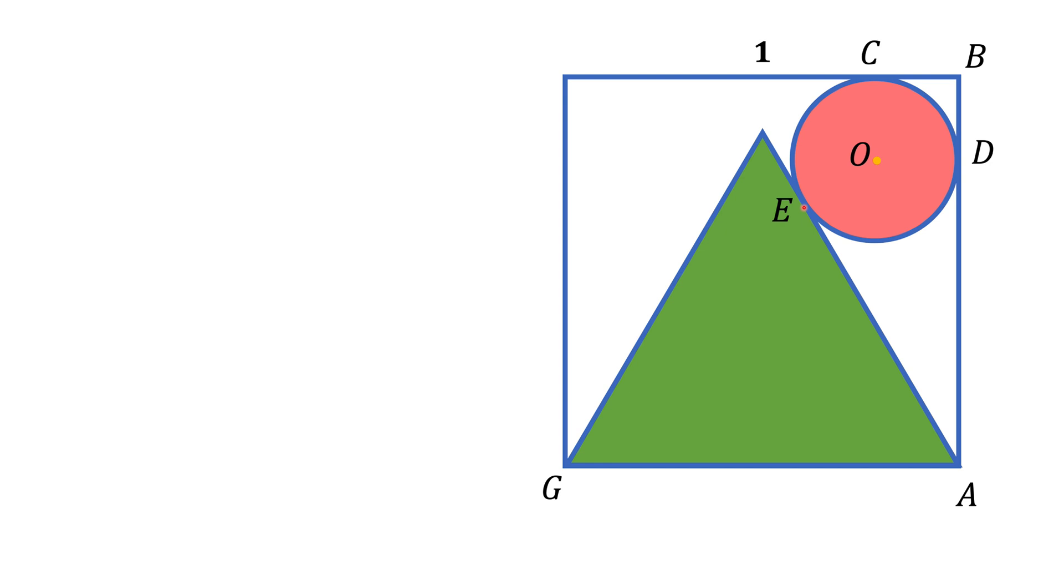First of all, let's look at the equilateral triangle. We know that angles in these triangles are 60 degrees, so this angle is 60 degrees. That means that the angle right here is going to be 30 degrees, because together they should give us the angle of the square.